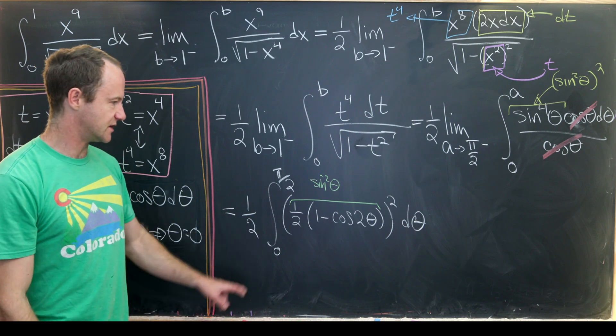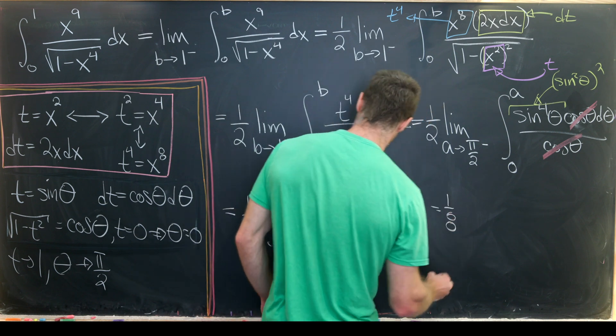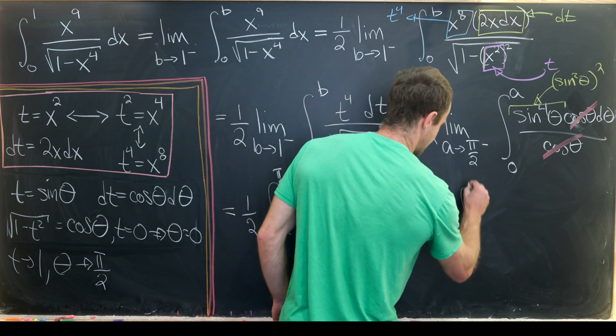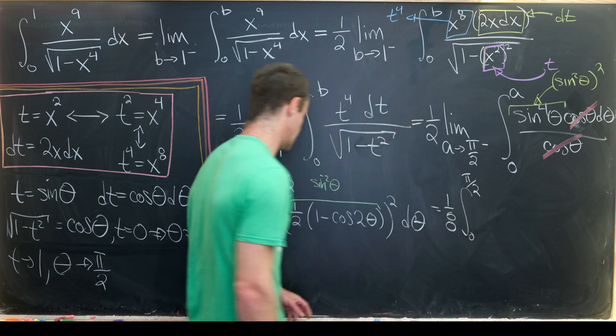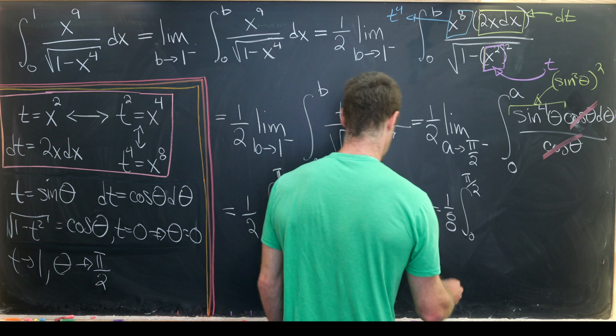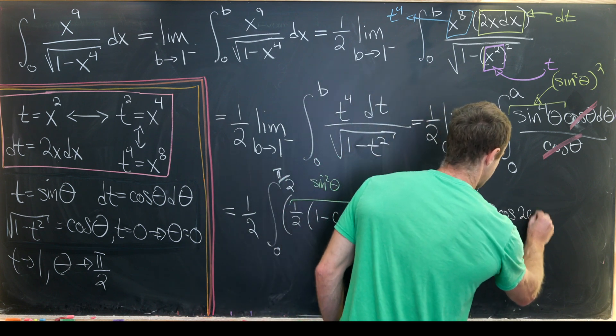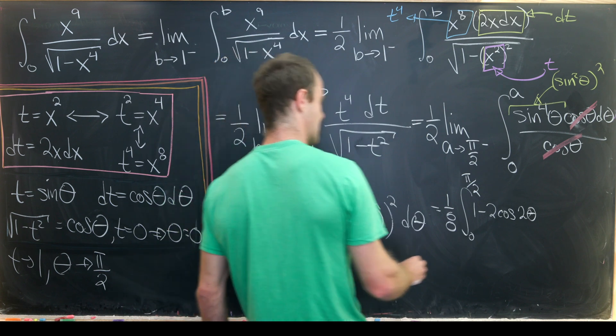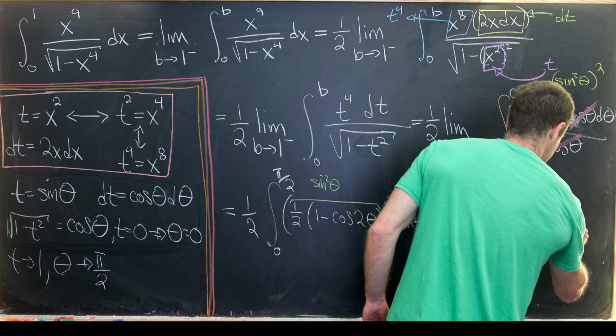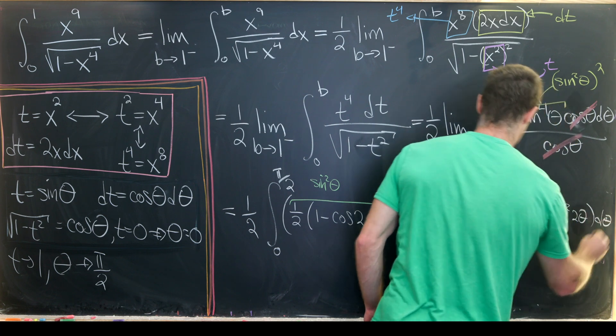We can square this half and bring it out, giving us 1/8. So we have 1/8 times the integral from 0 to π/2. Multiplying this out gives us 1 - 2cos(2θ) + cos²(2θ) dθ.